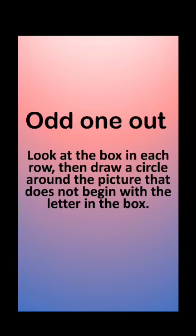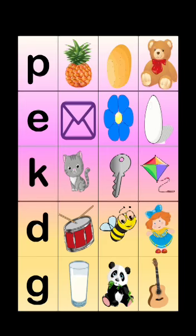Now move to the next activity: Odd One Out. Look at the box in each row, then draw a circle around the picture that doesn't begin with the letter in the box. Now let's see what is here.